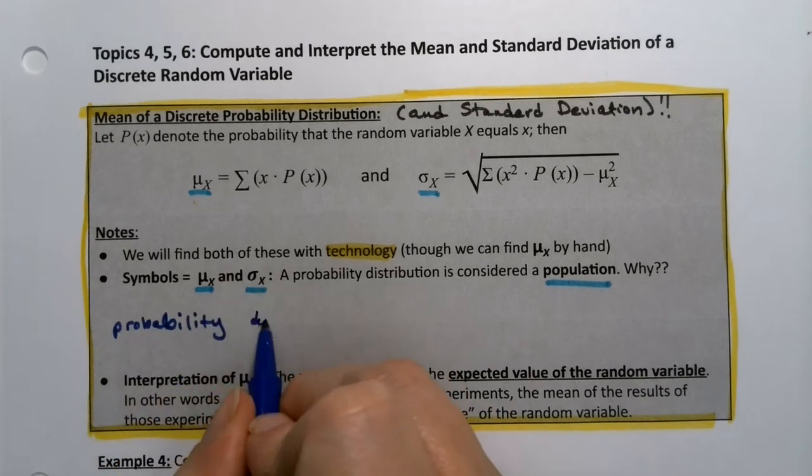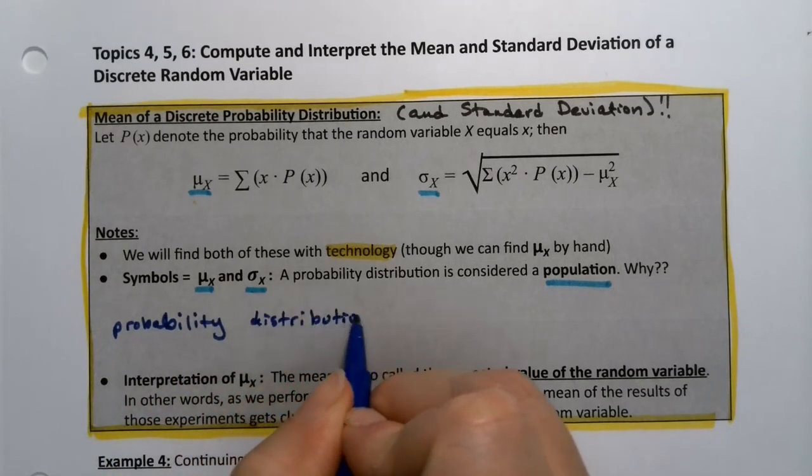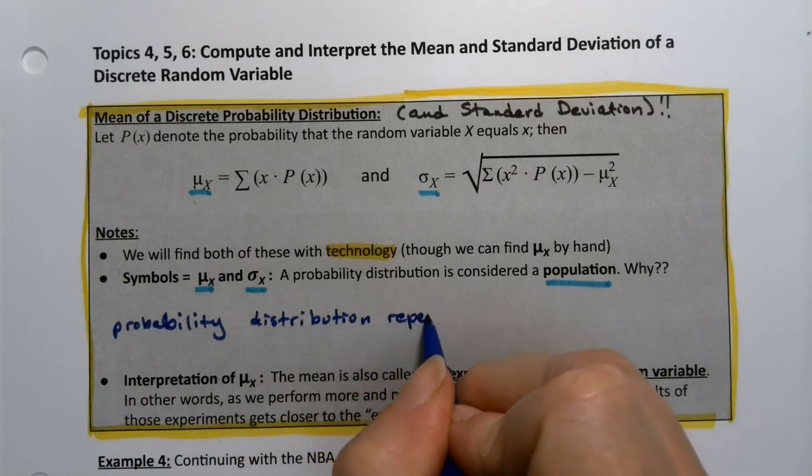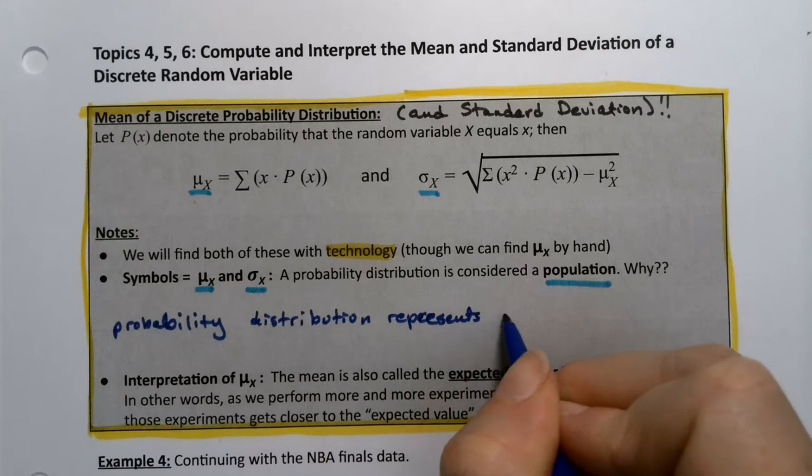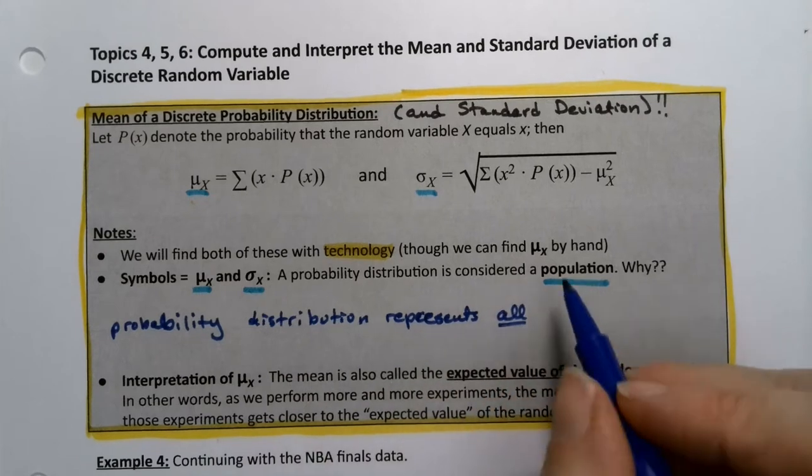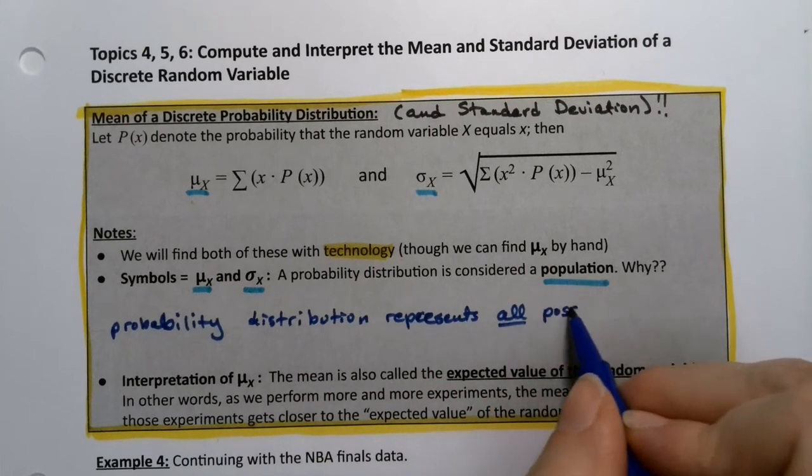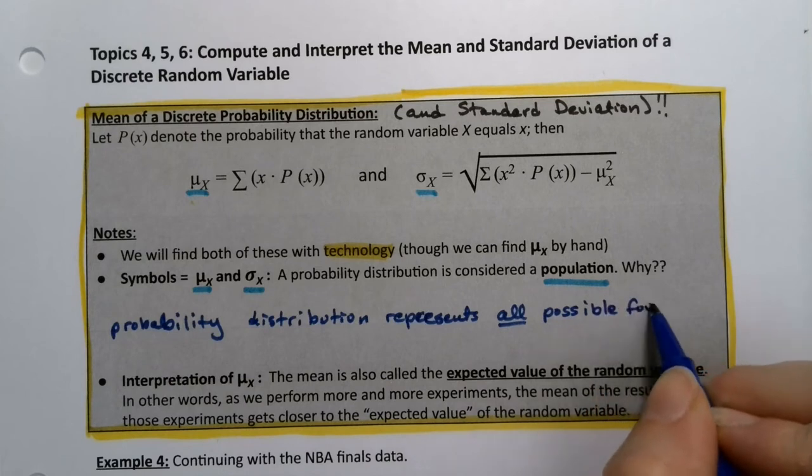Well, that's because a probability distribution represents all of the future probability. The distribution represents the entire future possible future outcomes, and so it becomes a population in and of itself.